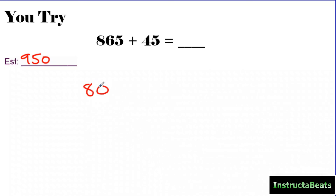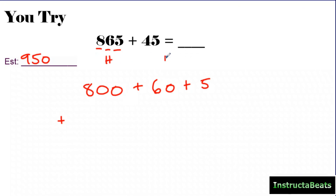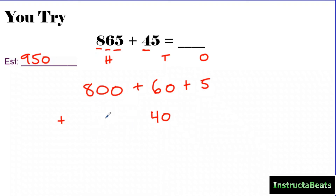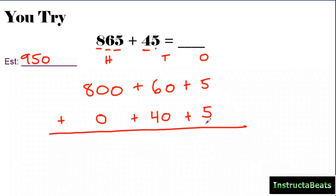Step one: I'm going to write out 865 in expanded form. I have an 8 in my 100s place which is 800, a 6 in my 10s place which is worth 60, and a 5 in my 1s place which is worth 5. And I want to add 45 to that. I'm going to use my 100s, 10s, and 1s chart to keep my place values lined up. Your 40 cannot go underneath your 800 — your 40 needs to be underneath your 10s place. It's totally okay not to have a 100; you can just put a 0 there to help make sure you're still lined up.